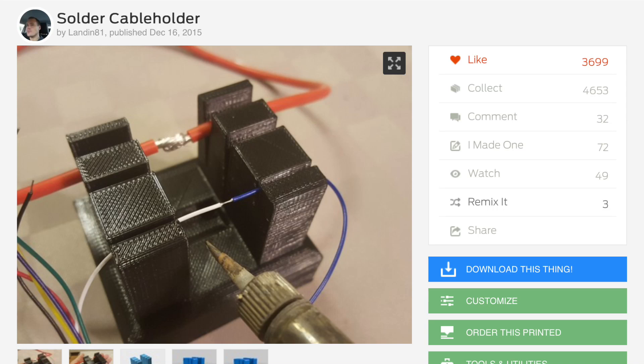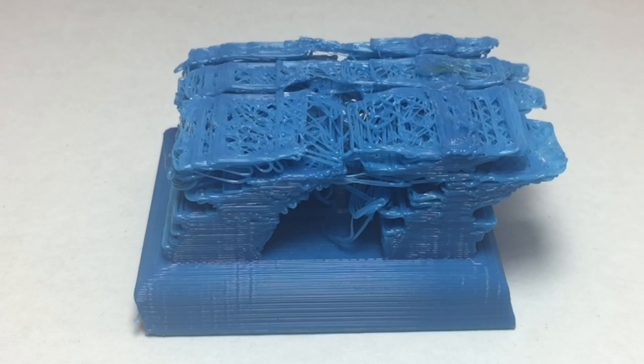Here's the design I found on Thingiverse. It's the solder cable holder by user Landon81. When I printed it on my Fabricator Mini this was the result. It was shifting in the X direction and I just stopped the print. It looks so bad.